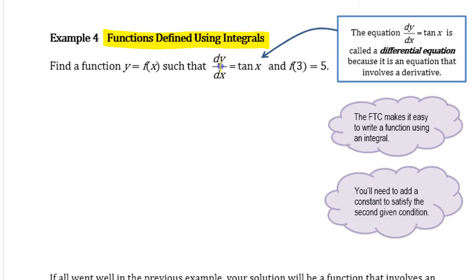So this thing says find some function such that that's its derivative. Write a function where tan x is the derivative and so that it has that condition, so that it passes through the point (3, 5).